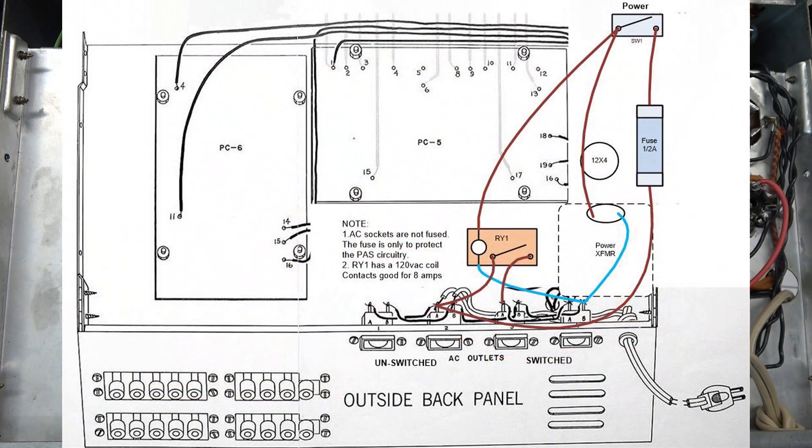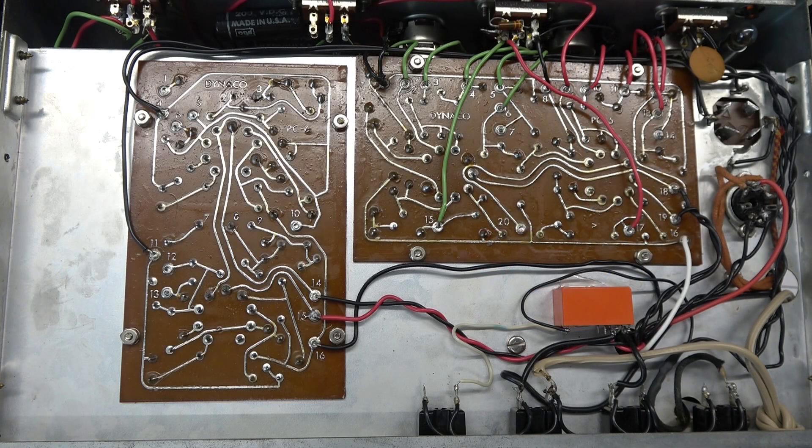I came in right off of the unswitched outlets and grabbed that AC. So you see one line goes up to the relay contact waiting to be switched to the switched outlets. The line also goes up to the fuse, through that half amp fuse to the power switch, and then it goes to the primary of the power transformer which powers up the preamp. Then I tagged off of that to activate RY1 which is turning on your switched outlets, removing the stress from the power switch.